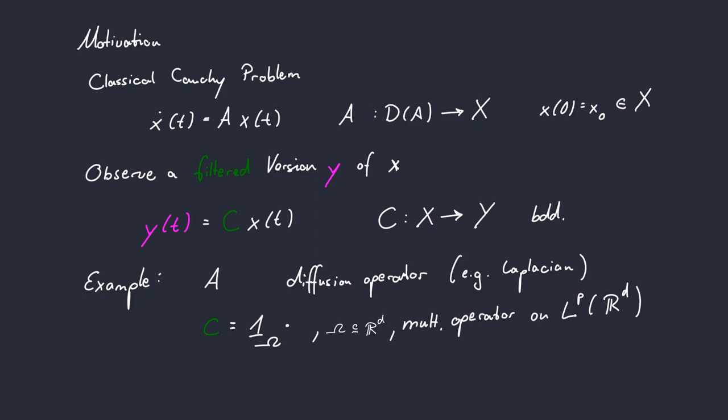Now consider the following example. Let A be a classical diffusion operator, for example, think of the Laplacian. And let C be the multiplication operator with an indicator function. Here the indicator function is taken with respect to a set omega, which is a subset of the d-dimensional space.